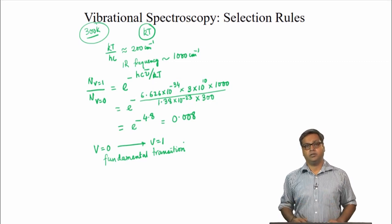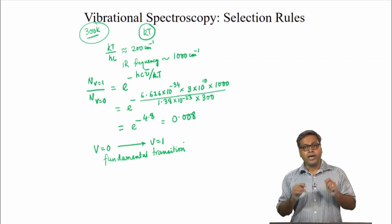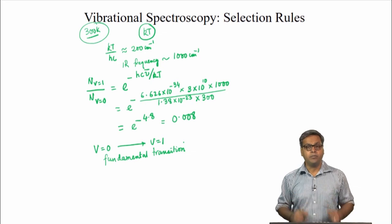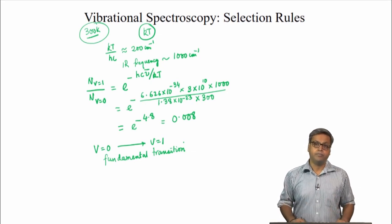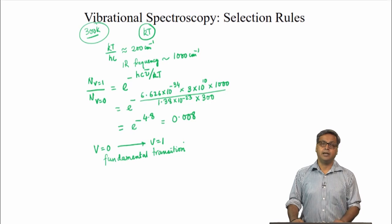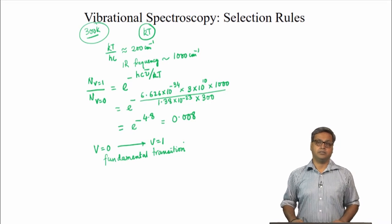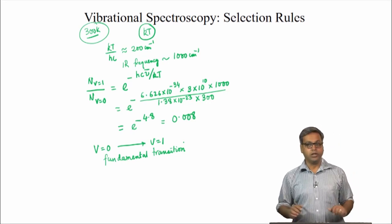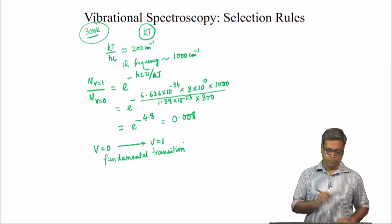The question is: do we get a single line in the experimental IR spectrum? We will discuss this in the next lecture. Now let us look into some problems.